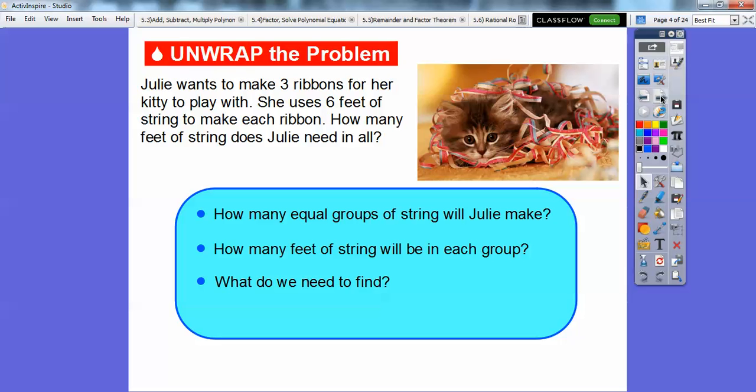So let's answer some questions here. How many equal groups of string will Julie make? Well, she's going to make three ribbons right there. So three equal groups. And how many feet of string will be in each group? Each ribbon is six feet right there. And so what do we need to find? We need to find how much string Julie will need to make all three ribbons right there.